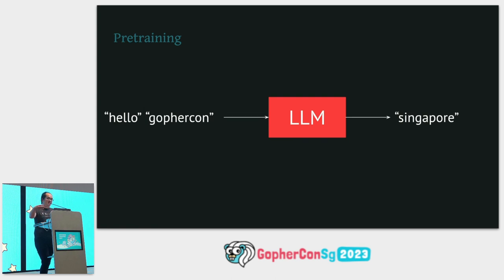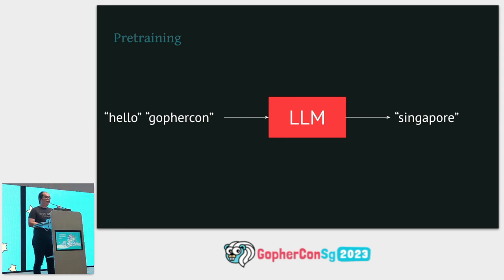In practice, pre-training steps are a lot more complex. You don't just ask it to continue the sentence — you can also mask an input, replace it with empty space, and ask it to fill in the blanks. The key is that pre-training makes the neural network really, really good at filling in the blanks or continuing the sentence. To do this, you need a massive amount of data.